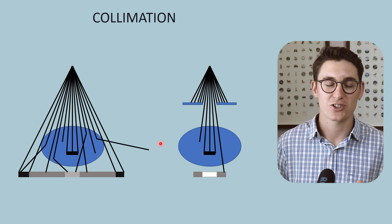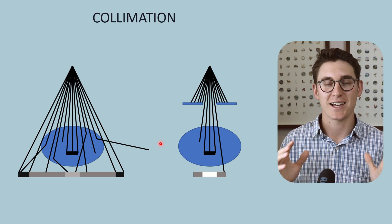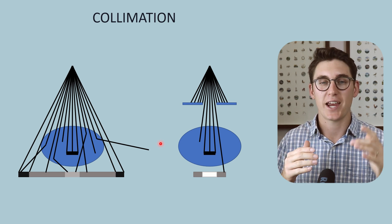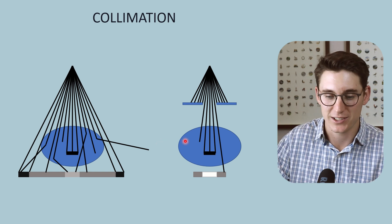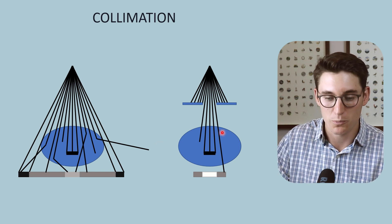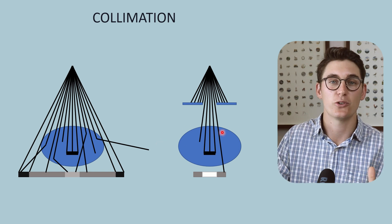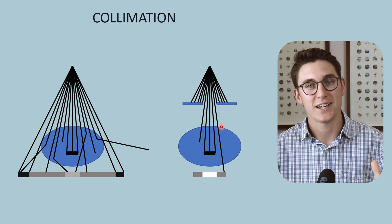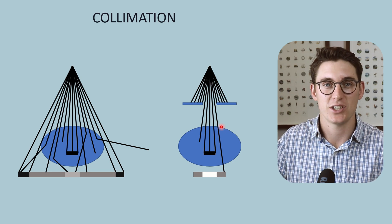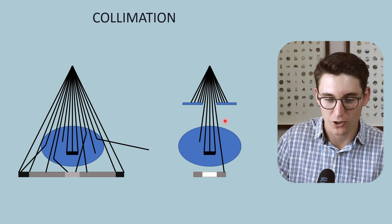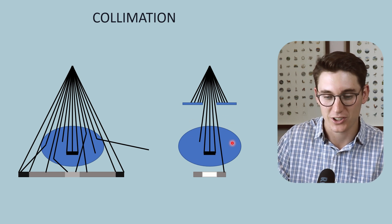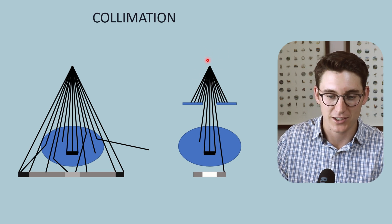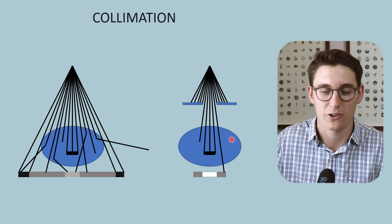One important thing to note: collimation does nothing to our x-ray spectrum. It doesn't change the energies of the x-rays reaching our patient. You mustn't confuse this with filtration, where we attenuate the lower energy x-rays. The x-rays reaching our patient still have the same x-ray spectrum that is generated at our anode.